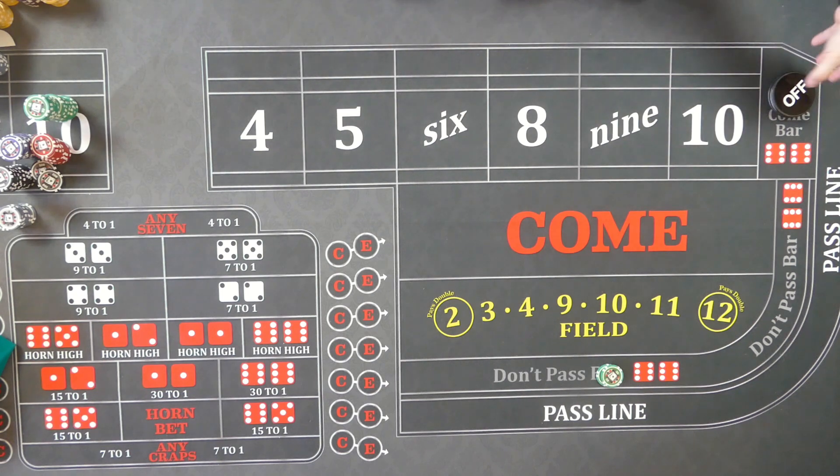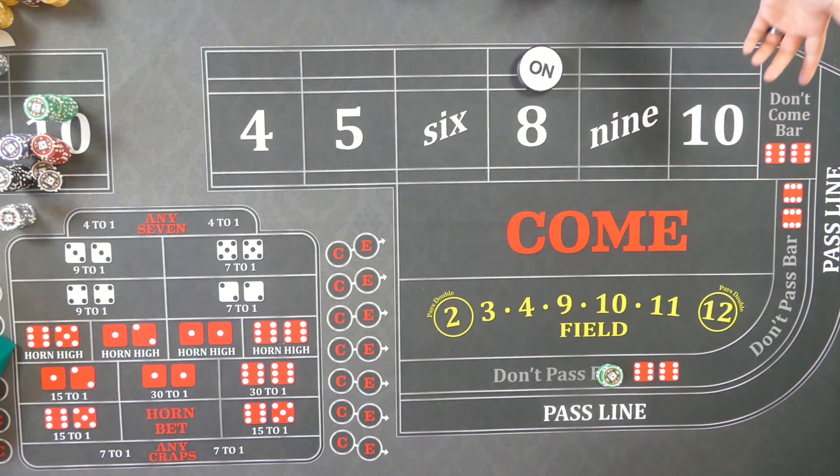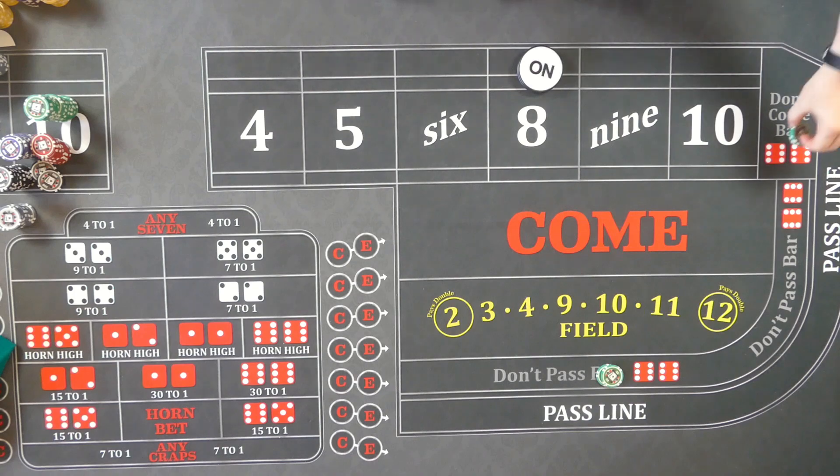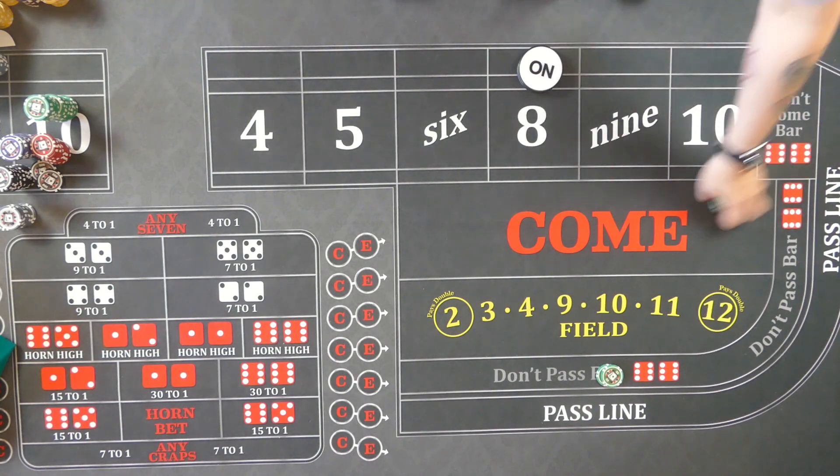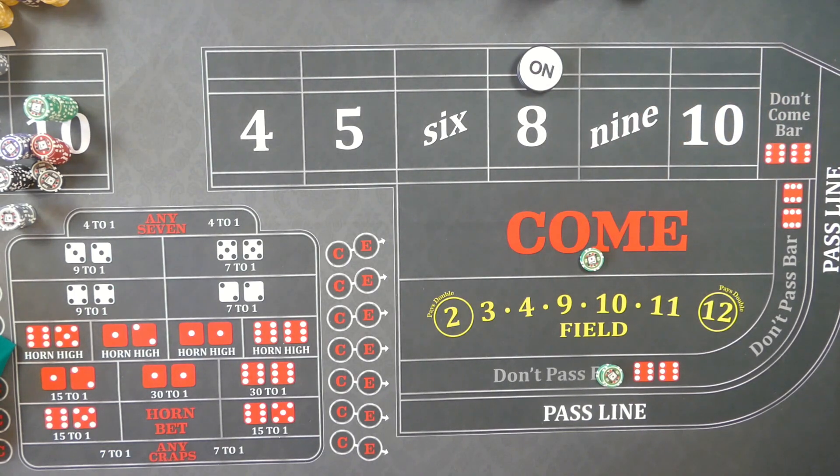Regardless of what the point is, let's say it was an eight. Next he would do a come bet. Yeah, it's one of these strategies - let me play the don't and let me play the come. He was hoping for a point seven out, because a point seven out he'd make a hundred bucks right here.